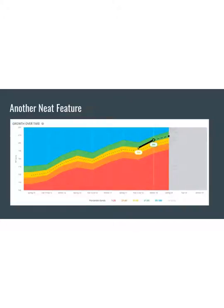There's another really neat feature on the student profile that isn't needed for Khan but is really informative. If you scroll to the bottom of the page, there's a graph that shows growth over time — a student's scores over time, how they've changed, and how that compares to where they're expected to be for their grade level at that time of year. You can find it by scrolling down to the bottom of the growth reports on each student profile page.